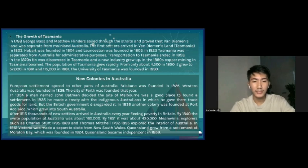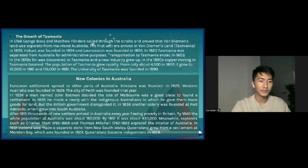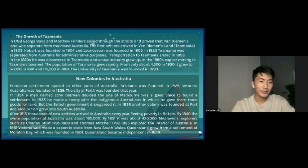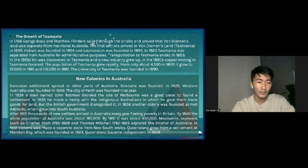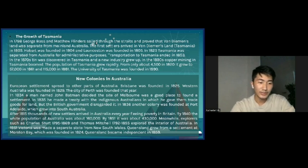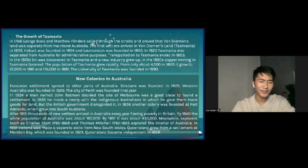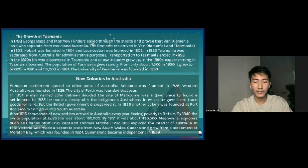The spread to other parts of Australia. Brisbane was founded in 1825 and Western Australia was founded in 1829. The city of Perth was founded that year. In 1835, John Batman decided the site of Melbourne was a good place to found a settlement, and in 1836 he made a settlement with the Aboriginals, in which he gave them trade goods for land. It was also founded at Port Adelaide. Scholars such as Charles Sturt and Thomas Mitchell explored the interior of Australia.